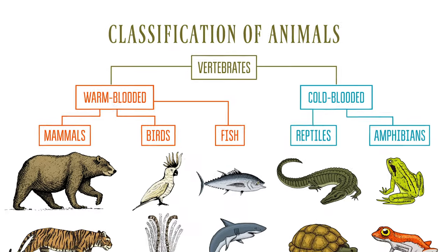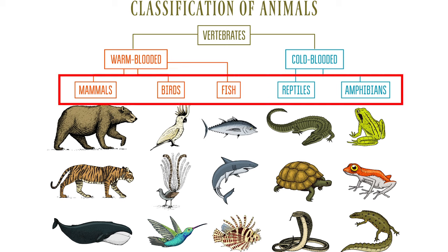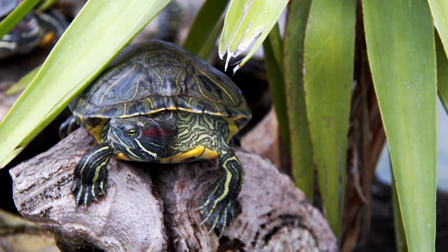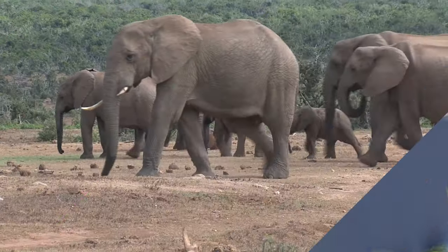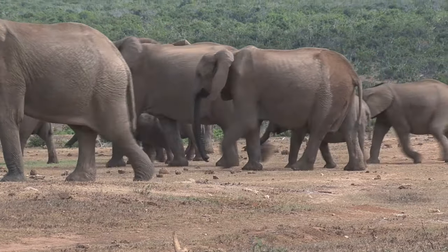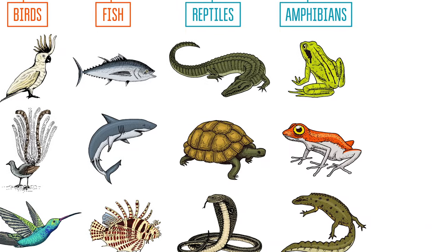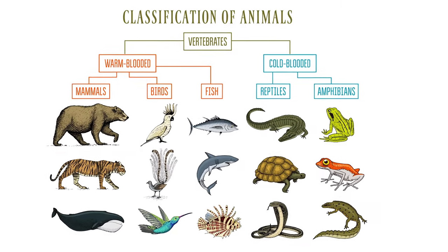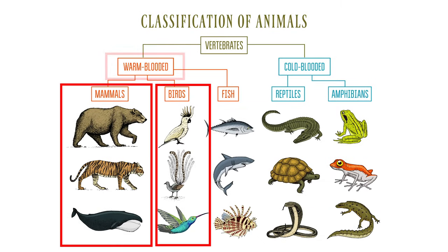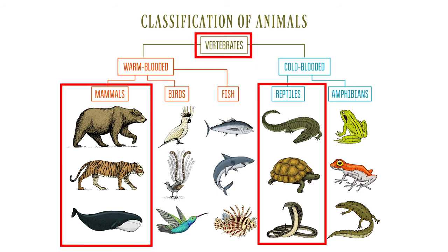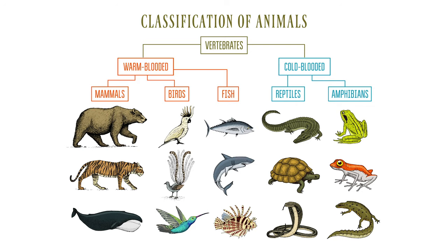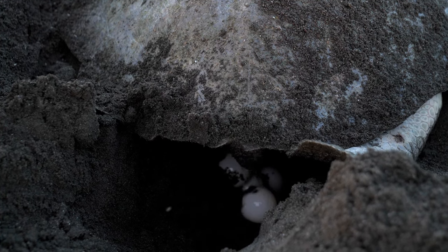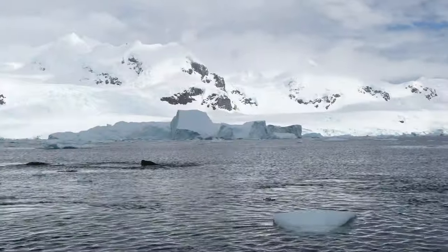Scientists have classified all vertebrates into five different groups: mammals, birds, fish, reptiles, and amphibians. Each group of animals has its own unique traits and characteristics, but some groups share one or more of the same traits. For example, birds and mammals are both warm-blooded, and reptiles and mammals are both vertebrates. However, they are not in the same group because they also have some differences — for instance, reptiles and fish lay eggs, but mammals do not.